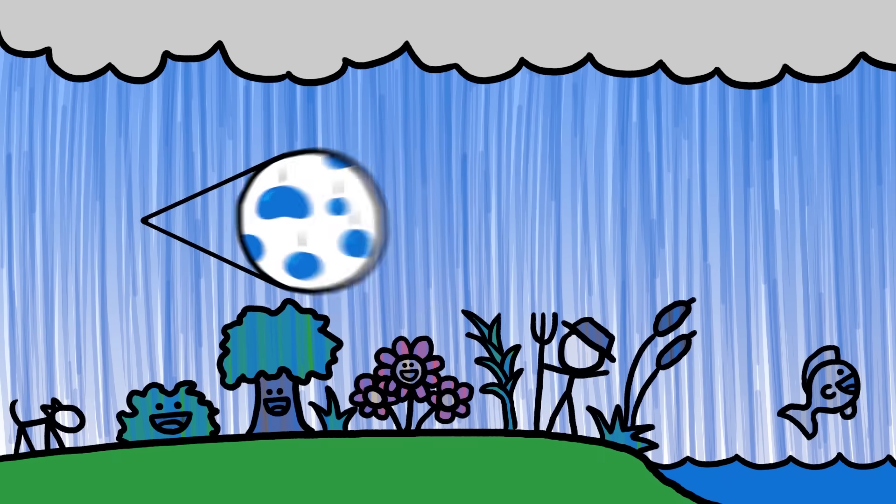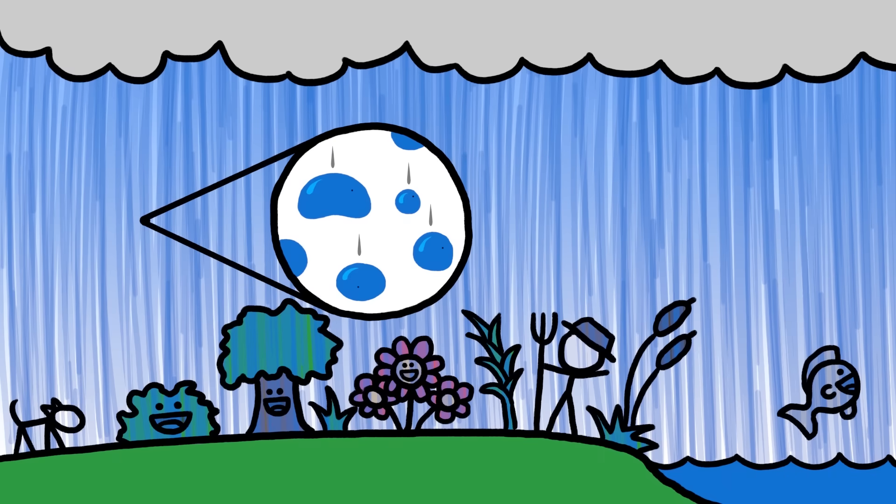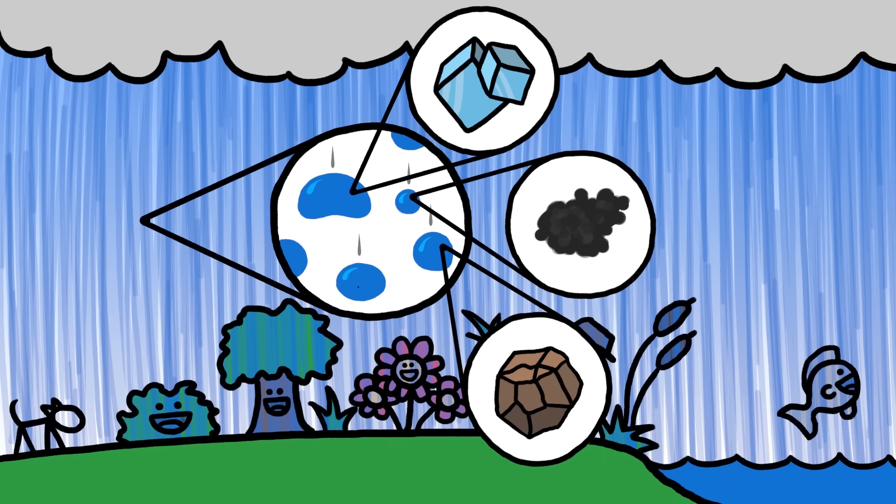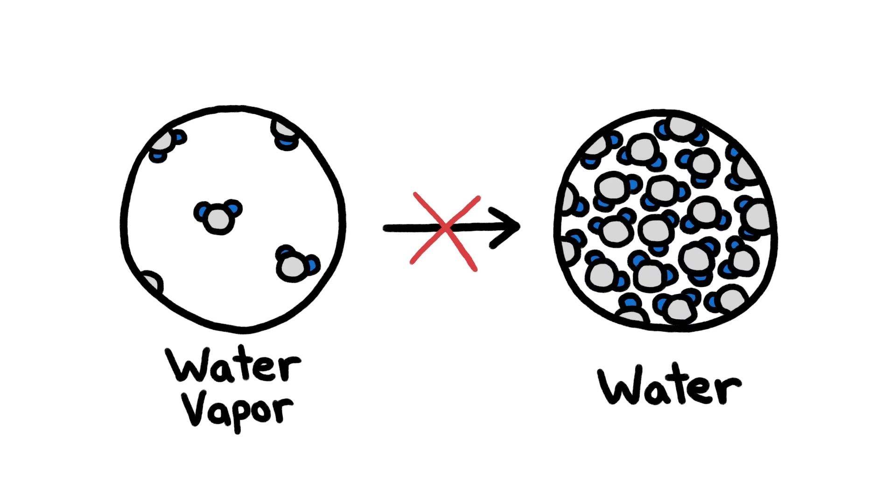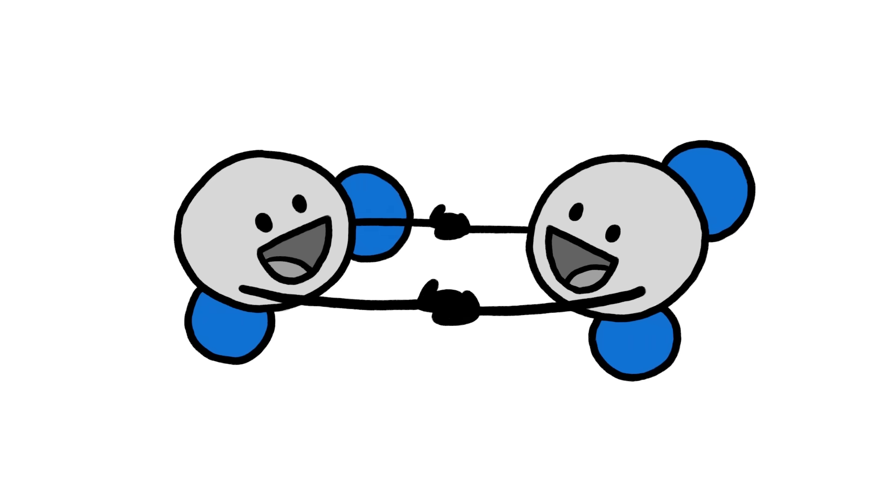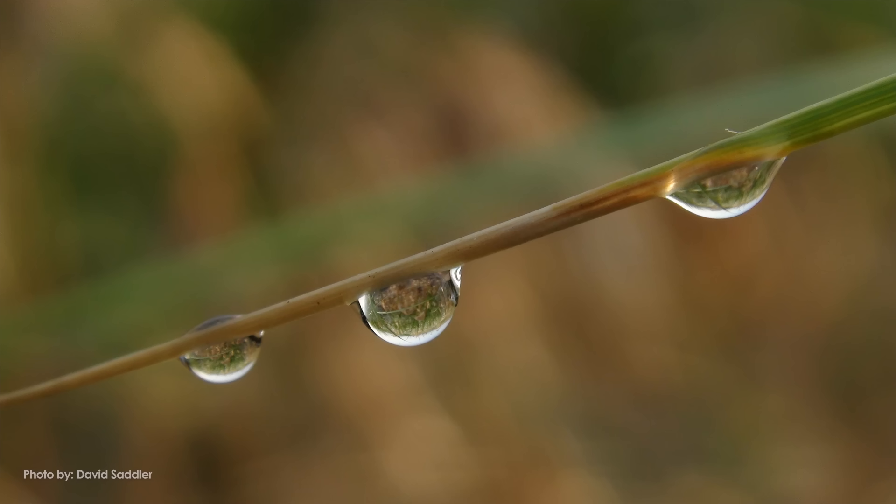Somewhere inside of every raindrop is a tiny impurity—a touch of salt, a speck of soot, a grain of clay—that's absolutely crucial to the raindrop's existence. In fact, without these microscopic pieces of dirt, there would be no rain, because water vapor can't condense into droplets on its own. Which is kind of weird, because water molecules like each other. If they didn't, they wouldn't cling to each other like this.